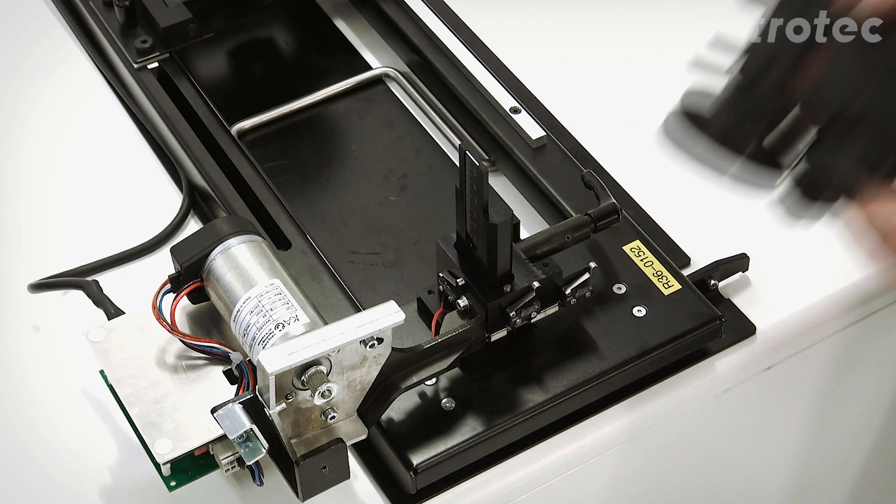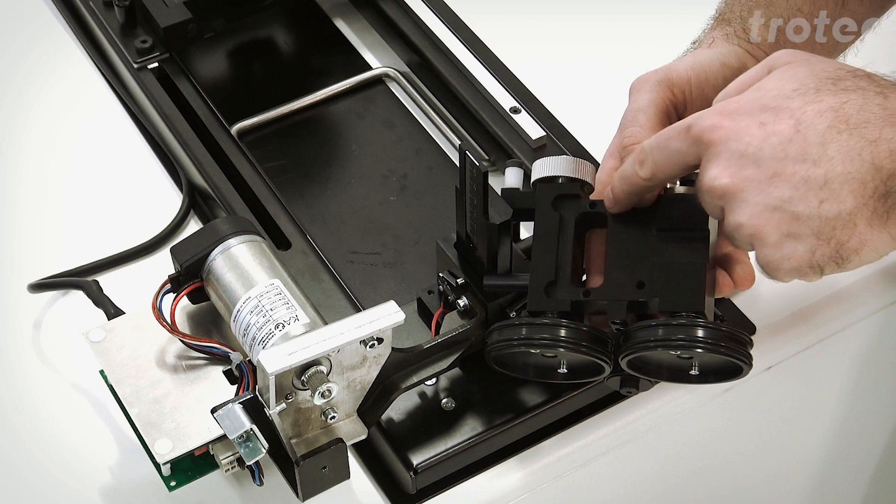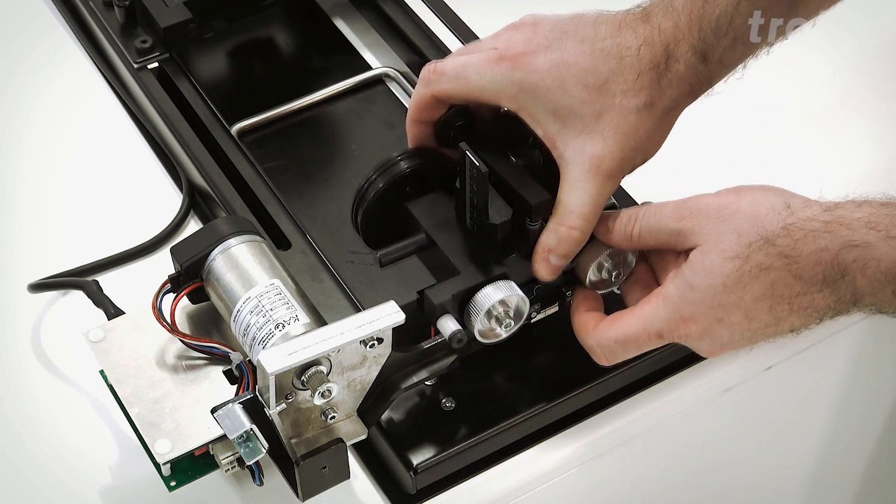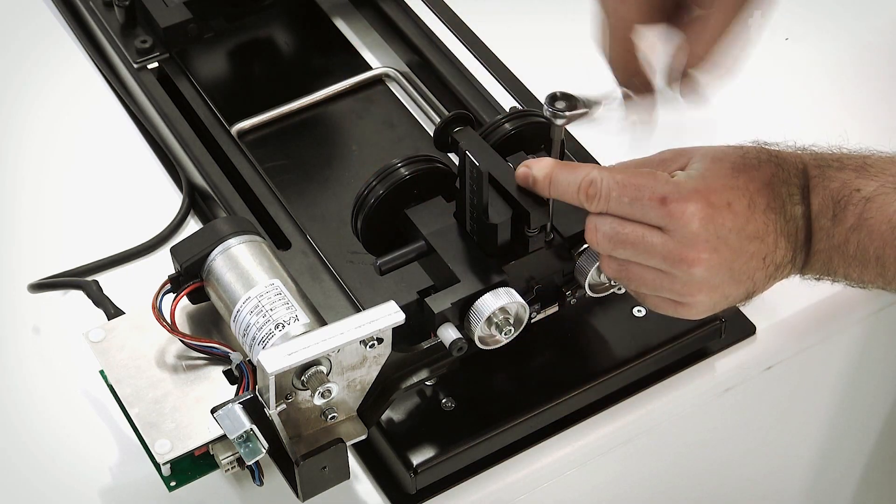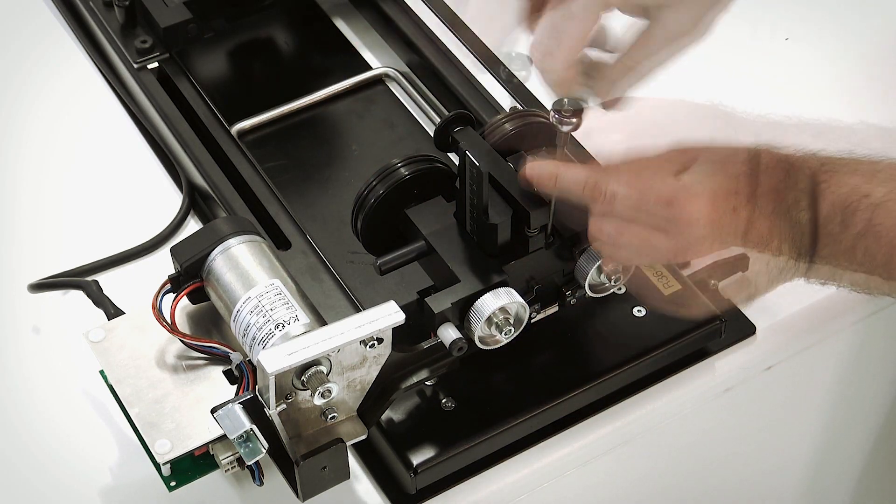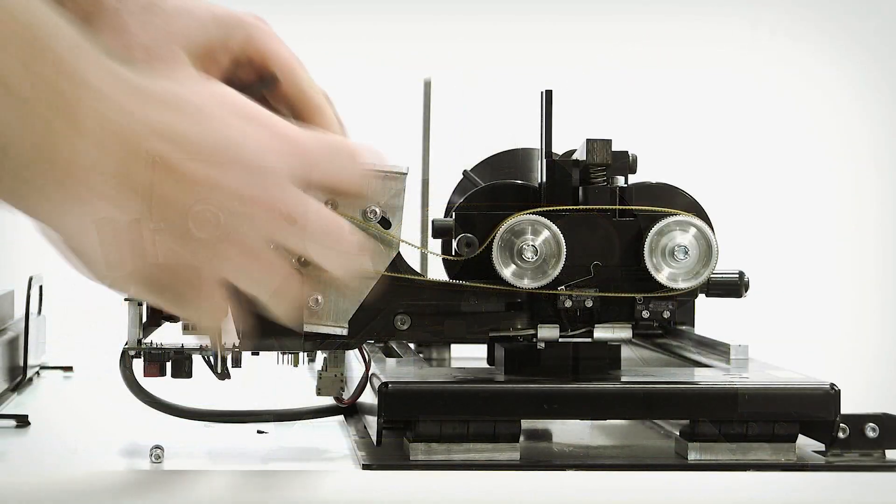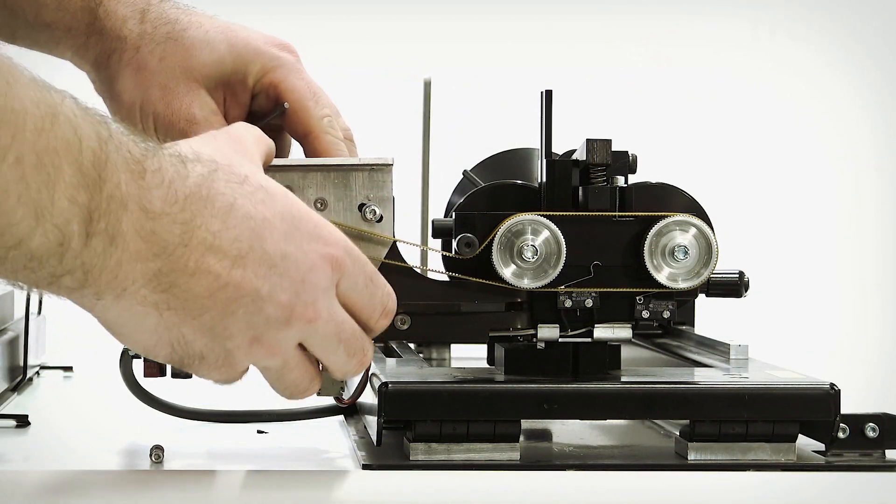When installing the roller mechanism, make sure the guide holes are set properly on the guide pins on the plate below. Attach the screws and install the belt. Tension the belt based on our previous demonstration.